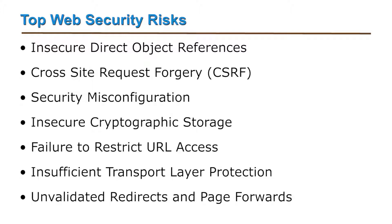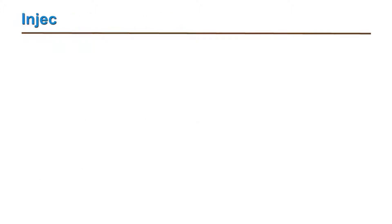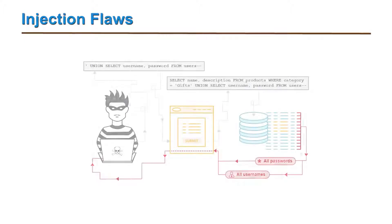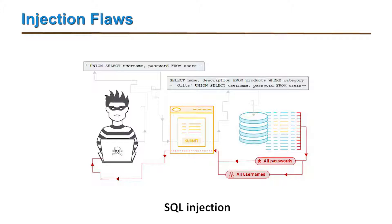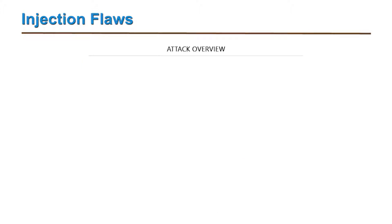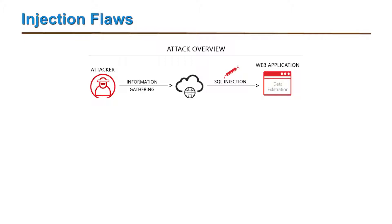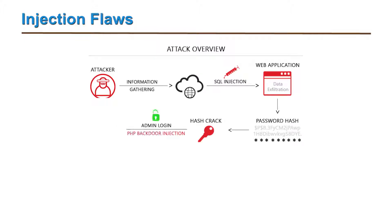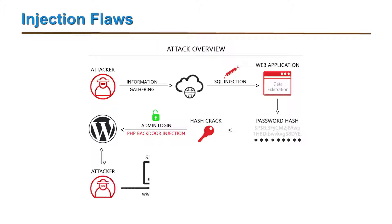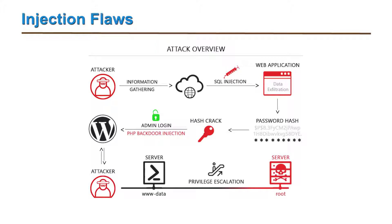We will see some of the significant ones one after the other. The first one is injection flaws, which particularly involve SQL injection. Injection flaws occur during the interpretation of a command or query where the data becomes untrusted. When the hacker injects, there occurs an execution of unintended commands or unauthorized data access.